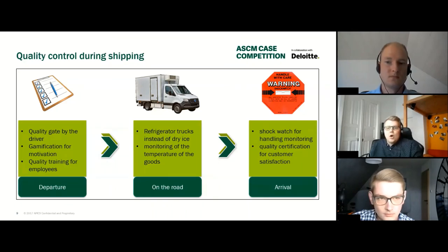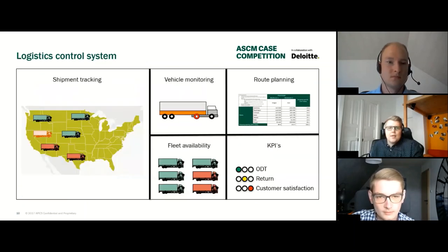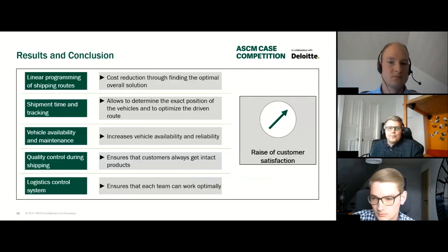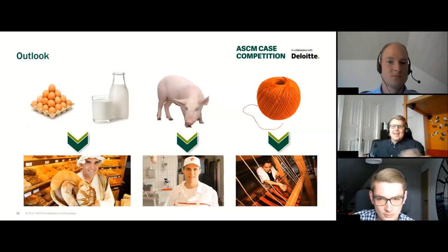To make all this possible, the system must process the data. This happens through a logistic control system. For each team and department, the relevant data is processed and made available, and additional key performance indicators can be shown. This allows many improvements, which we can't fully show here due to time constraints.